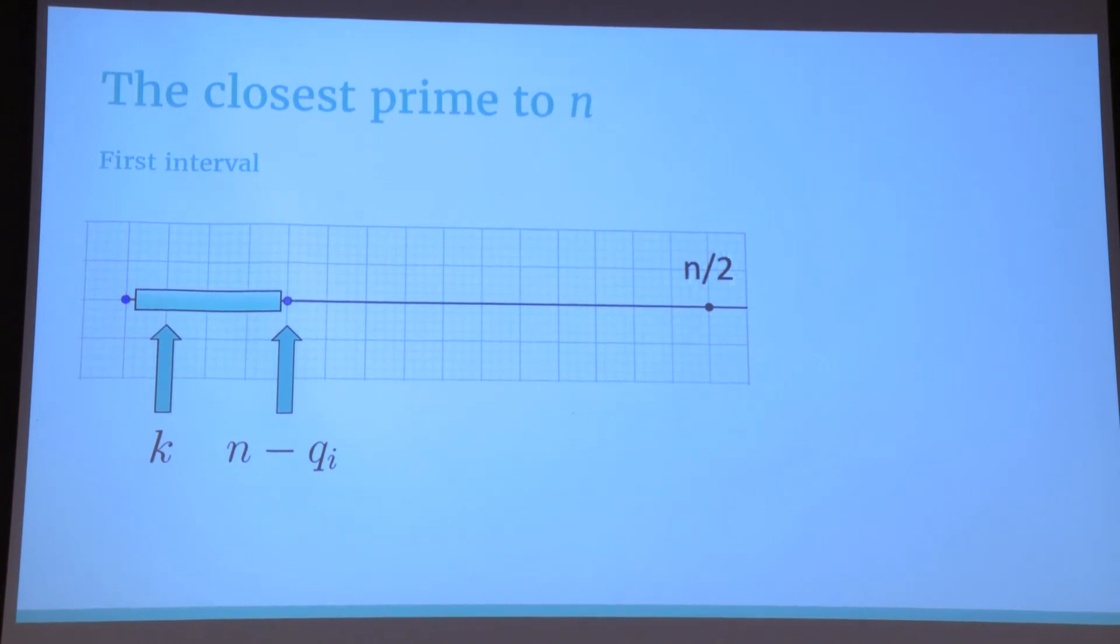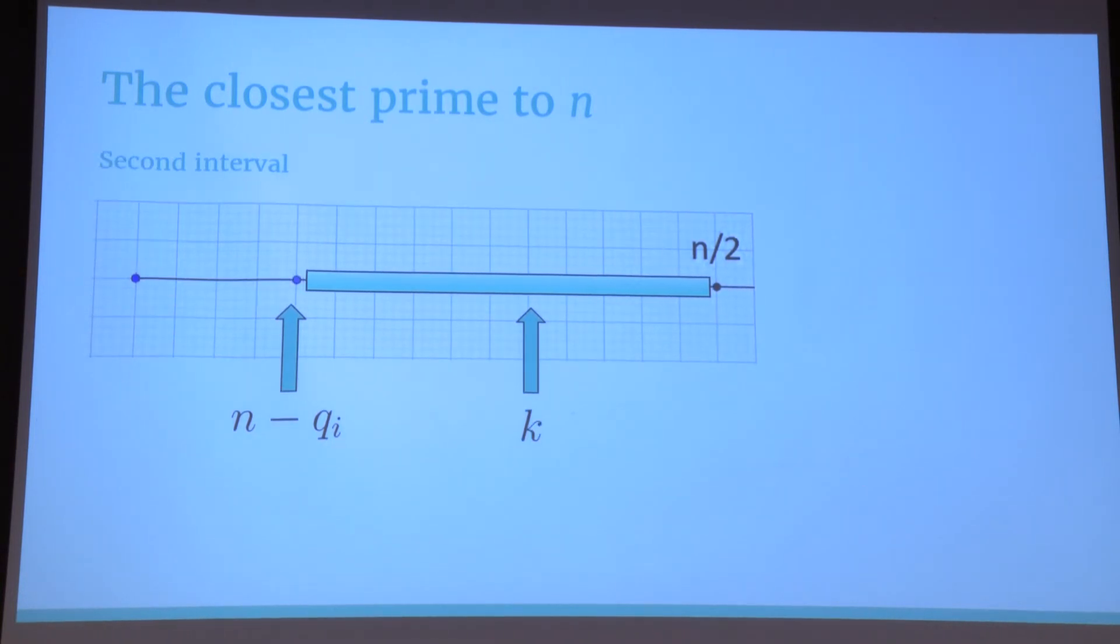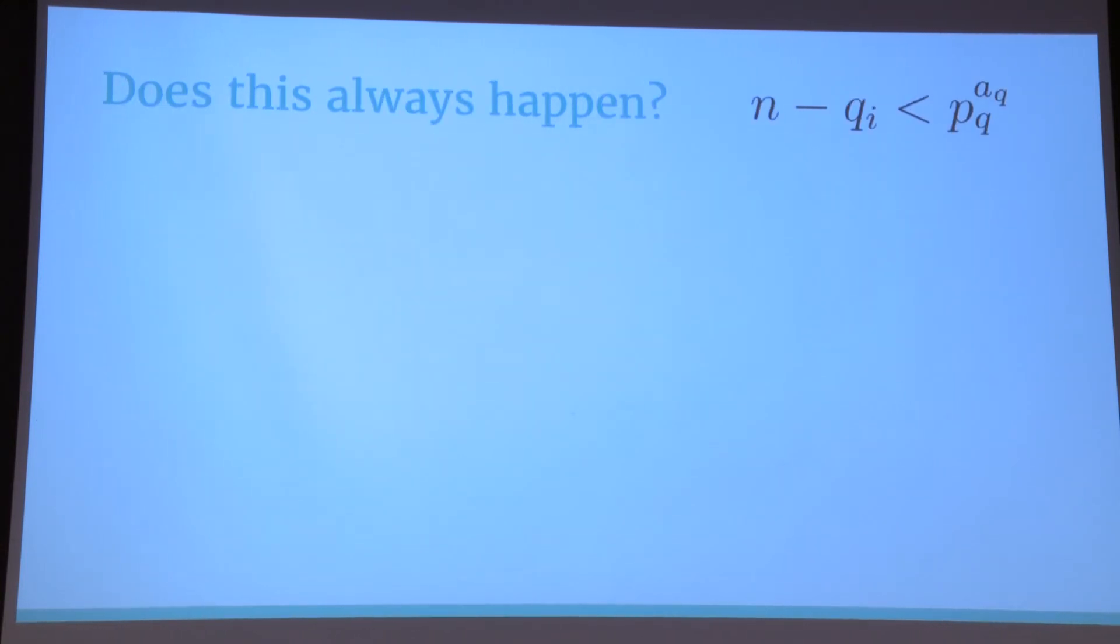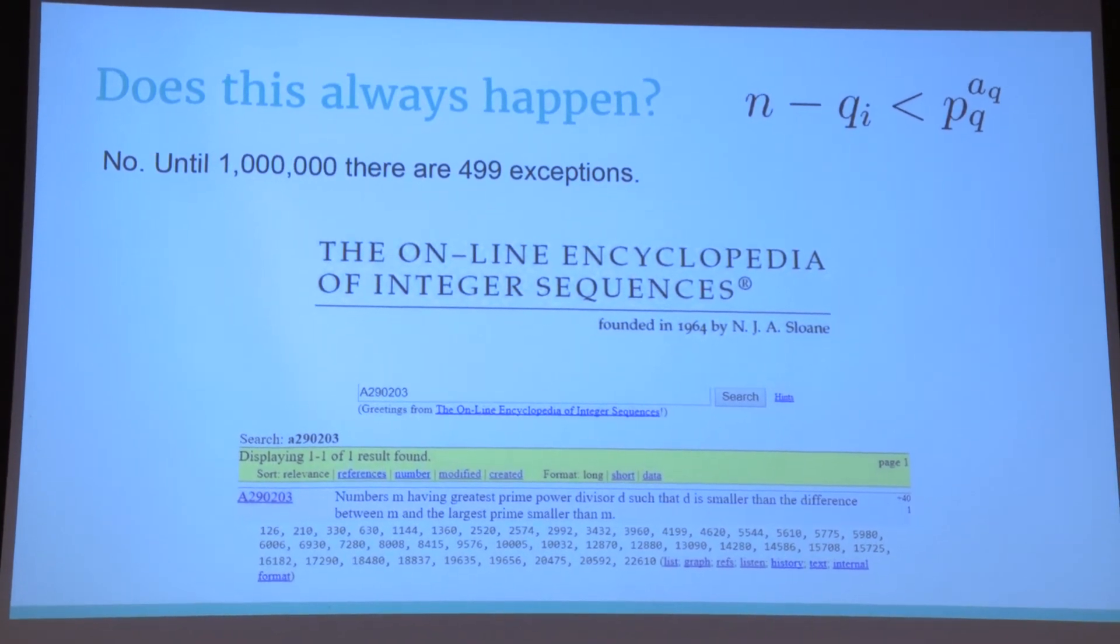If k is in the first interval, we can prove, using this inequality, that all the binomial coefficients n choose k are divisible by pq. On the other hand, if k lies in the other interval, then using the trick of the digit below, we can prove that all the binomial coefficients n choose k are divisible by qi. You might be wondering, does this always happen? Is it true that for all integers n, they satisfy this inequality here? Well, unfortunately not, because otherwise the conjecture would be proven. But until 1 million, there are only nearly 500 exceptions. And actually, we computed the sequence of numbers that do not satisfy this inequality. And if you are interested, you can check the online encyclopedia of integer sequences, because they published our sequence.